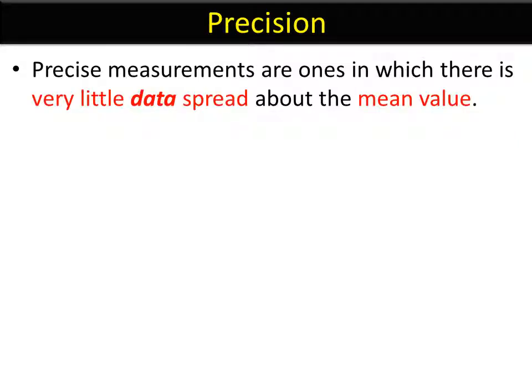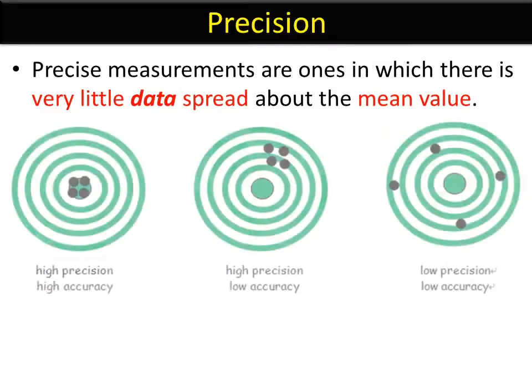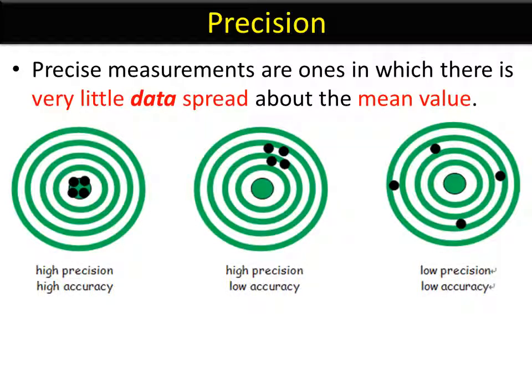Precision is a word often used alongside resolution to describe precision of an instrument. But in this case, we're looking at precision of the data, which is the spread around the mean value. This diagram helps explain that.